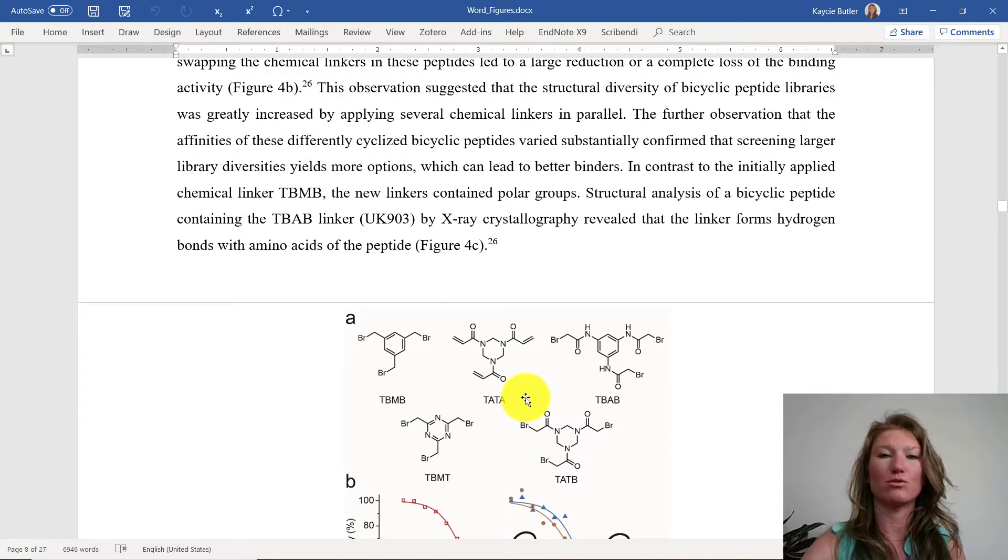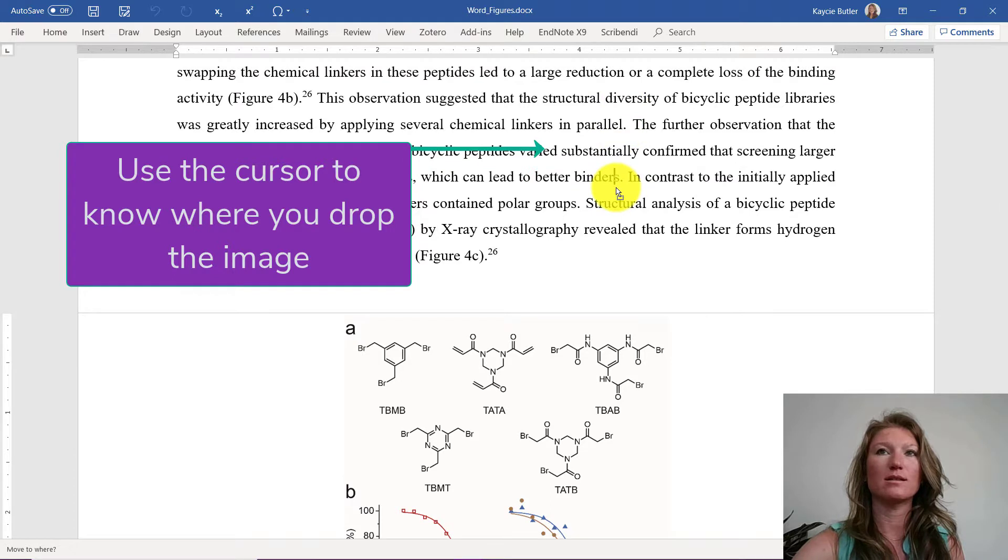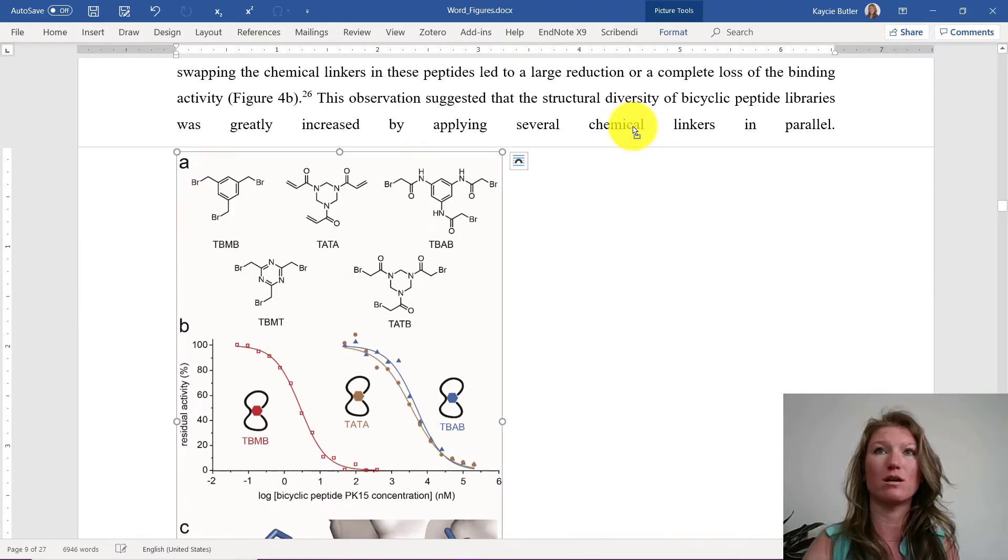So first, I'm going to show you just dragging this figure up into the body of the text so you see what happens. When you start to drag the figure, you see this cursor appears. It lets us put this figure wherever we want. So for maximum drama in Word, I'm going to insert it right here in the middle of the paragraph.